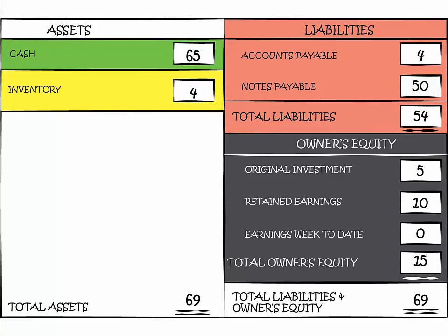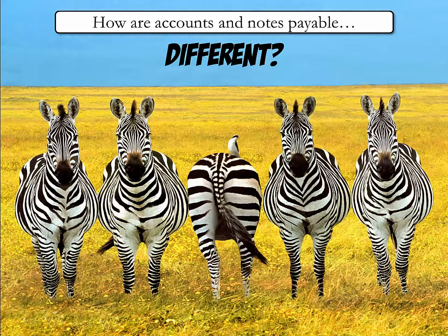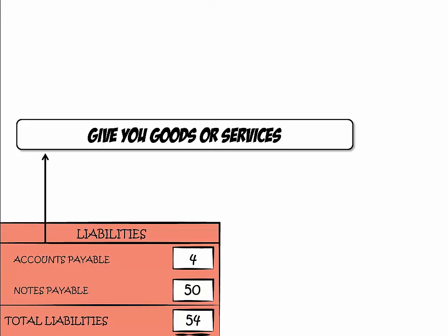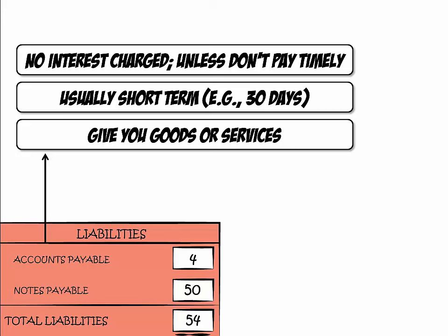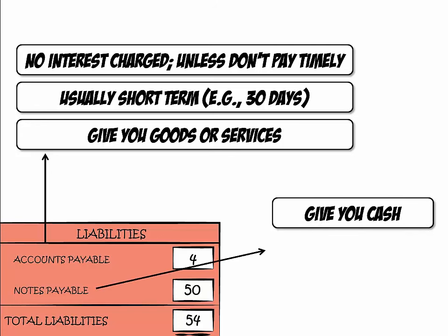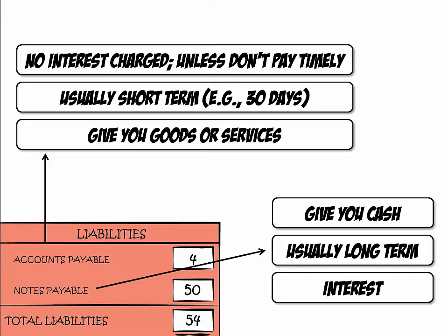We have added a new category named accounts payable under liabilities to reflect your $4 credit at the grocery store. How are accounts payable and notes payable different? Accounts payable give you goods or services — it is usually a short-term liability and a benefit for which you are charged no interest unless you don't settle your debt on time. Notes payable give you cash, usually for a long term, and you owe interest in order to use the cash involved.